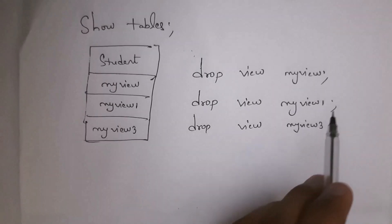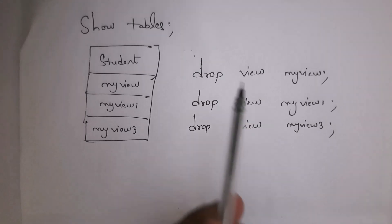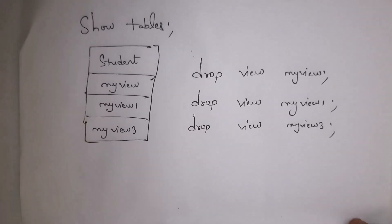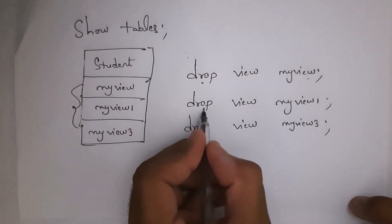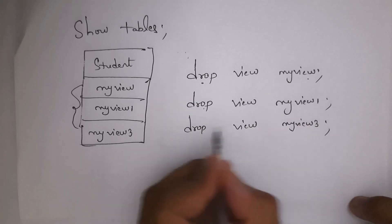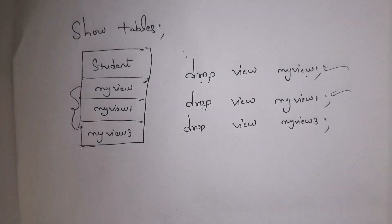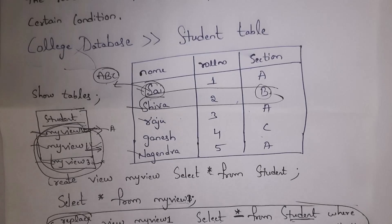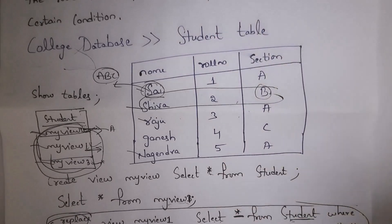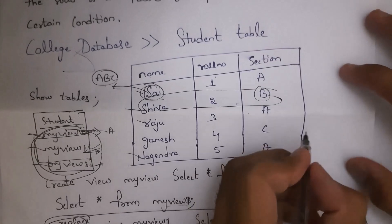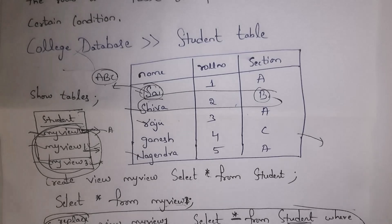Deleting a view is the same as deleting a table. To delete a table you write DROP TABLE table_name. To delete a view you write DROP VIEW view_name. To delete the three views: DROP VIEW my_view, DROP VIEW my_view_1, DROP VIEW my_view_2. If you create a view by selecting only a single table, we call it a simple view. In this example I created views by selecting only the student table, so these are simple views.